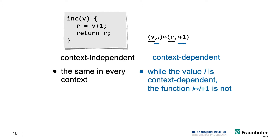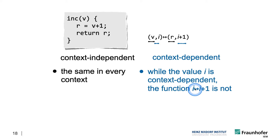Note that while the value i is context dependent, a summary function that maps i to i plus one — so this value to this one — is really not context dependent. I can represent this function using exactly this denotation, and that denotation is exactly the same for every calling context. The representation is independent of any calling context because i is a free variable. But the concrete value of i can depend on the context. The trick is to go away from encoding these values explicitly, because their encoding would mean that these summaries themselves would become context dependent and therefore would not be reusable.